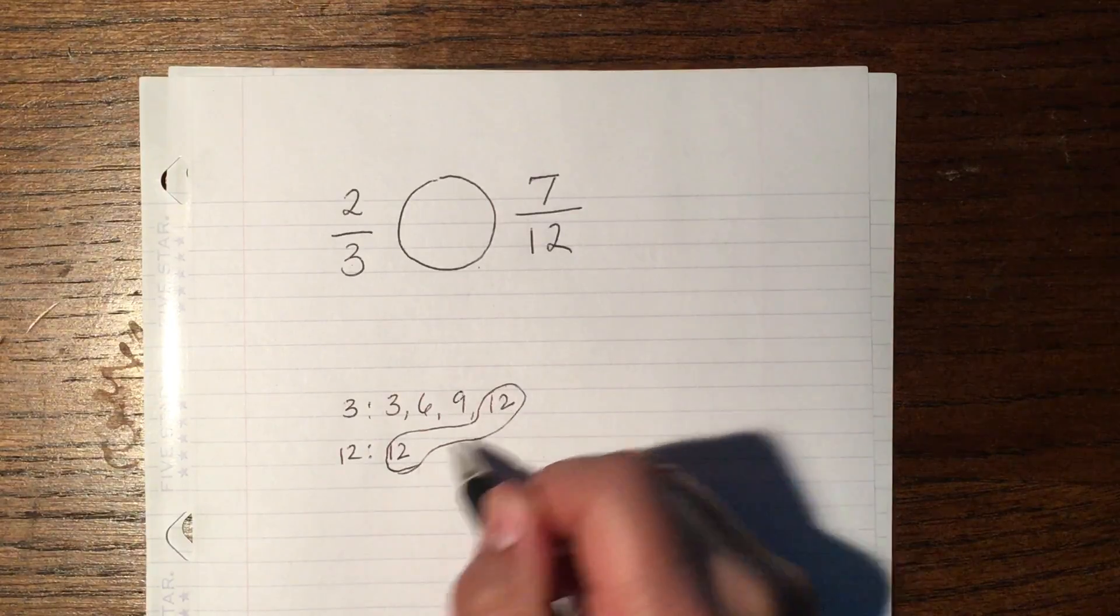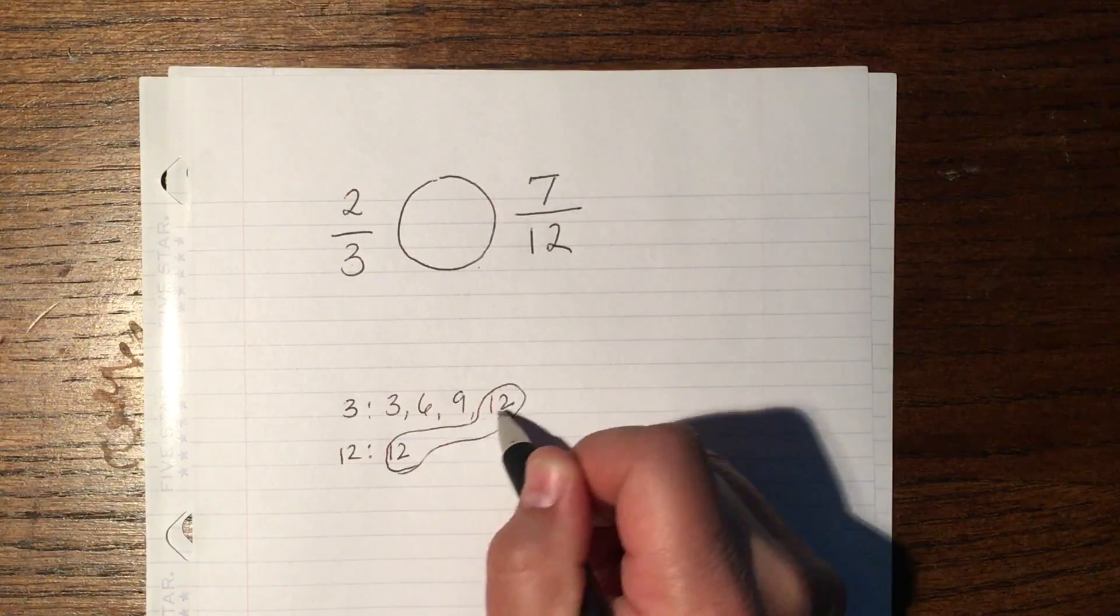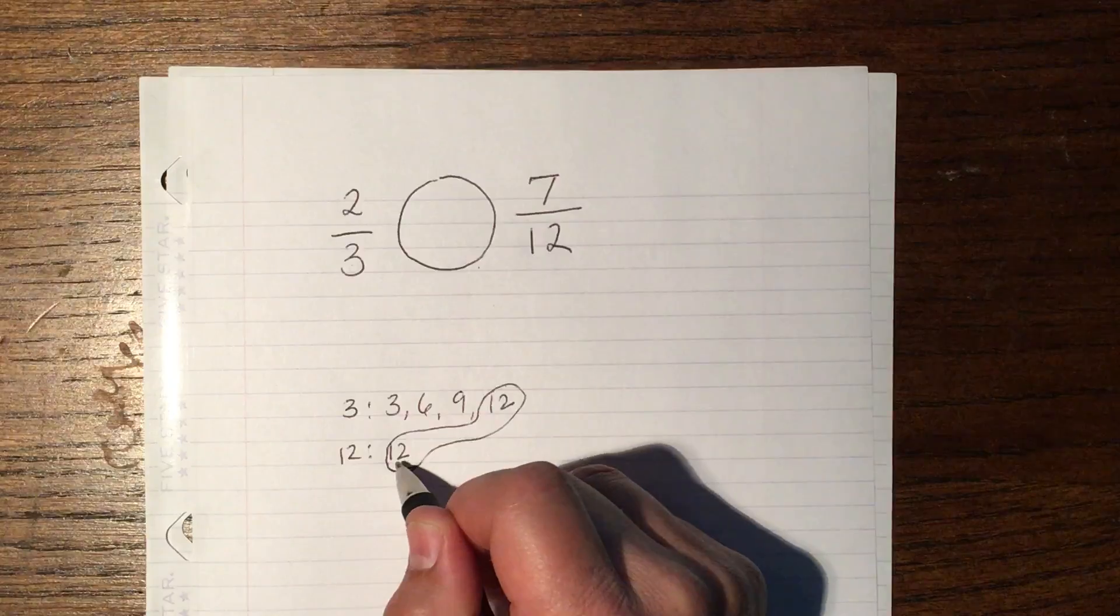All right, so when I have the number that I found, this is called the least common multiple.